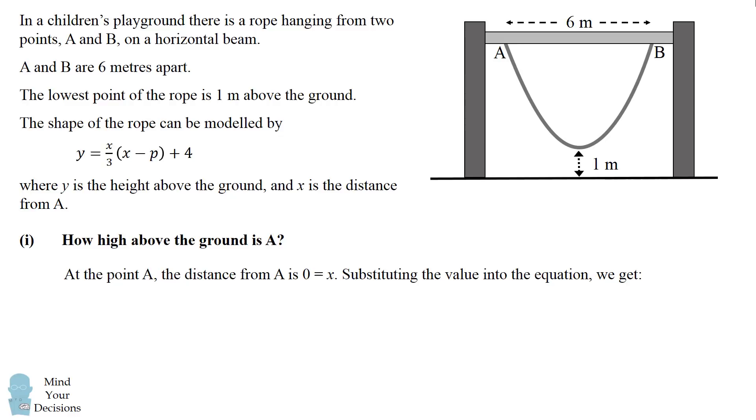Substituting this value into the equation, we get y equals 0 over 3 times the quantity 0 minus p. This will become 0 and then we have plus 4. This simplifies to be y equals 4. Hence point A is 4 meters off the ground.